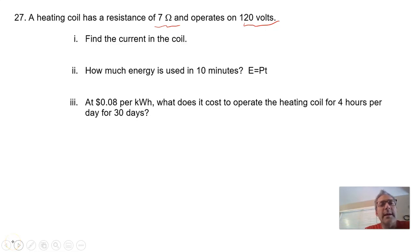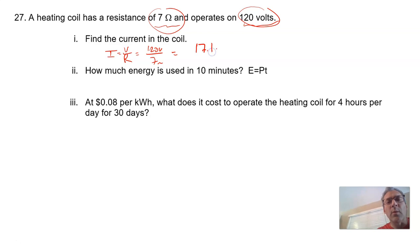Number 27, a heating coil has a resistance of 7 ohms and operates on 120 volts. Find the current in the coil. We can simply use Ohm's Law for that. I equals V over R. 120 volts divided by 7 ohms. 120 divided by 7, 17.1 amps.